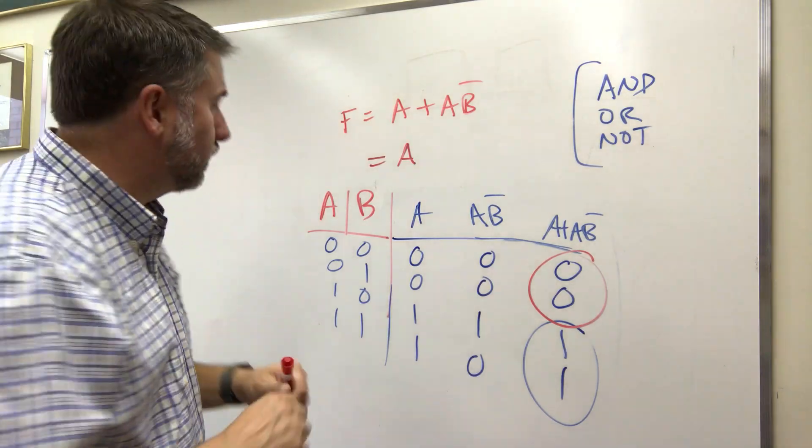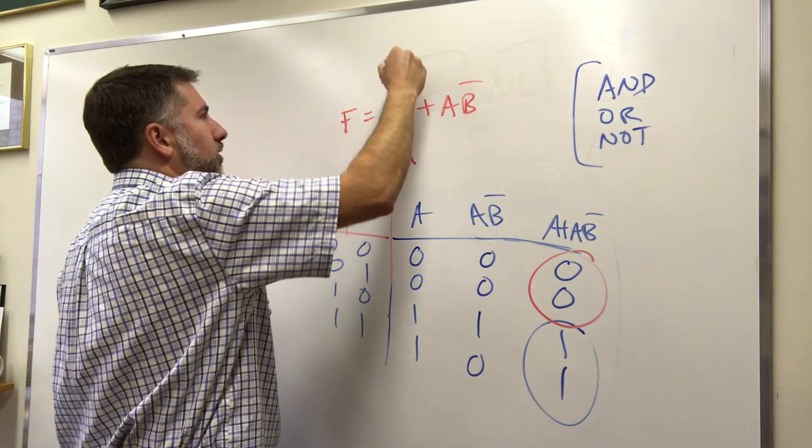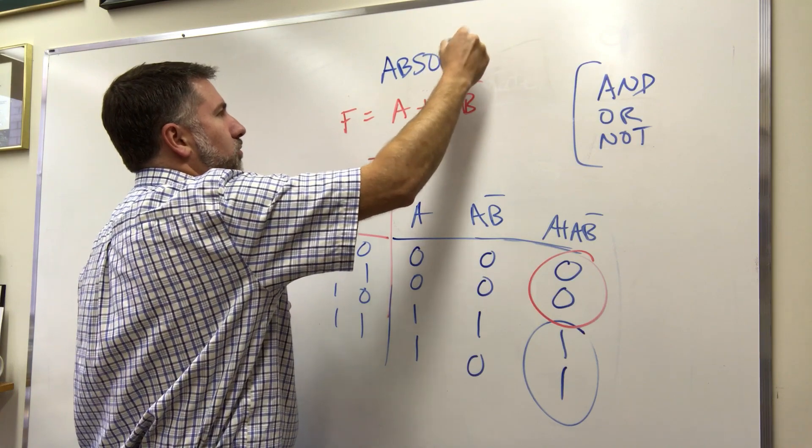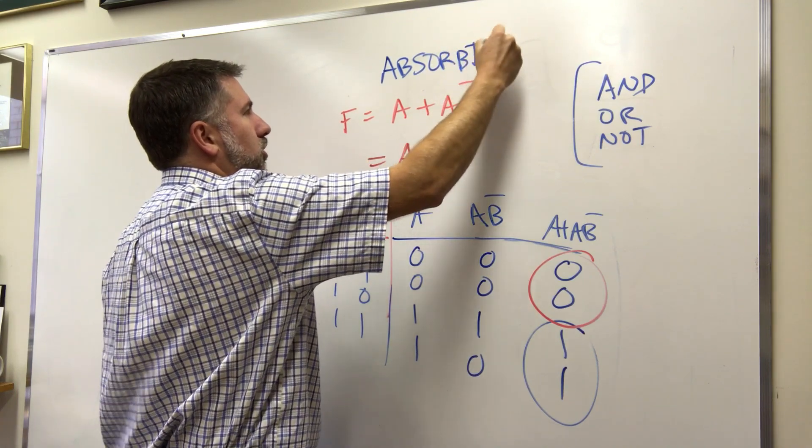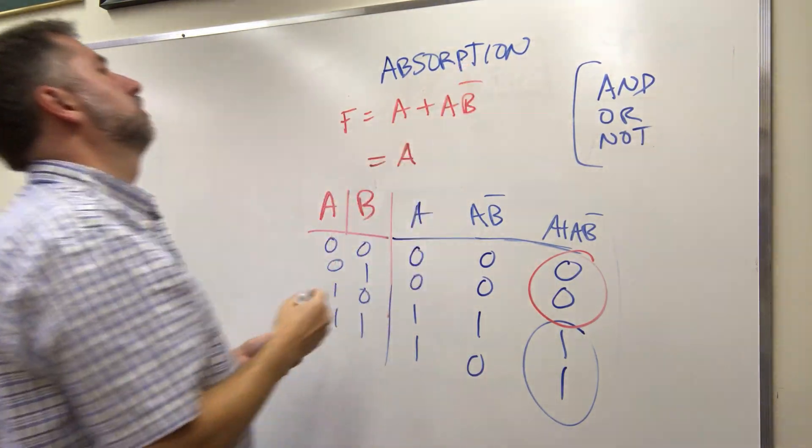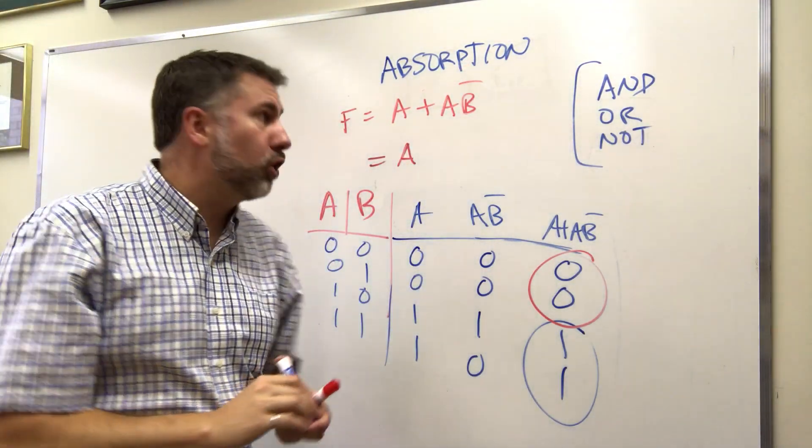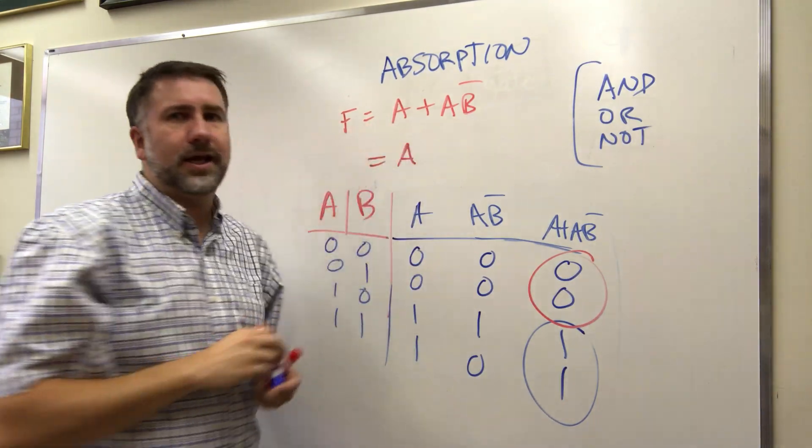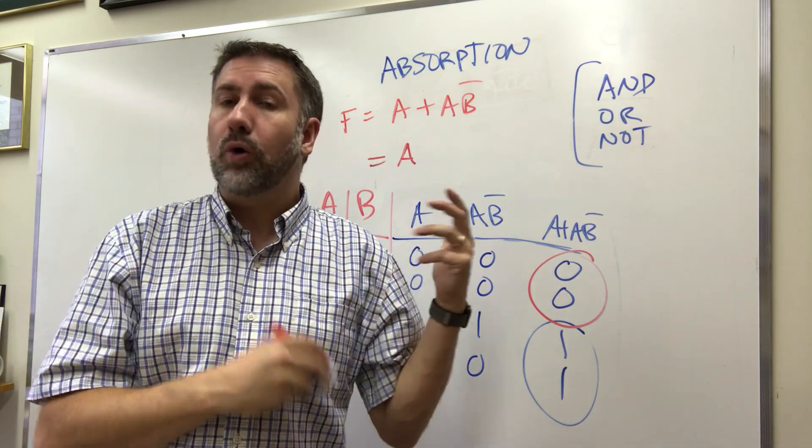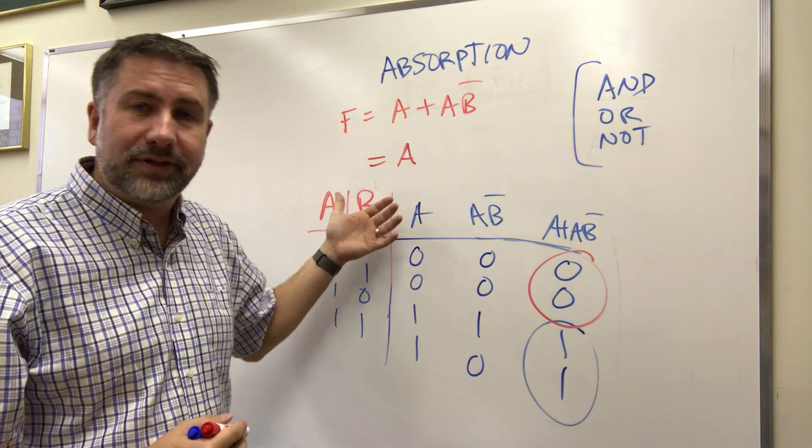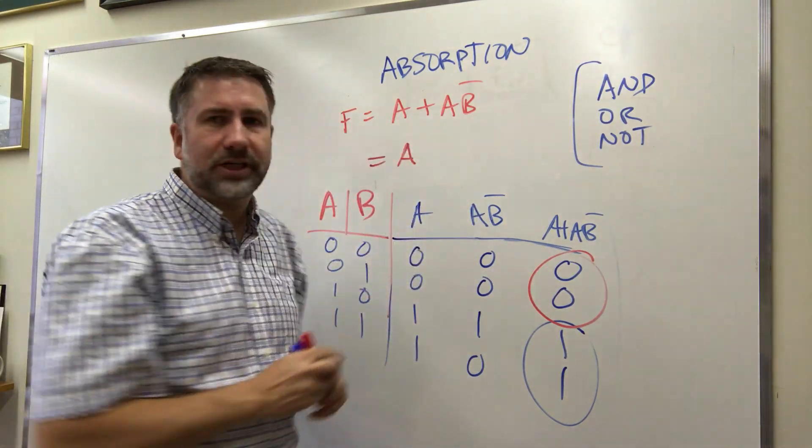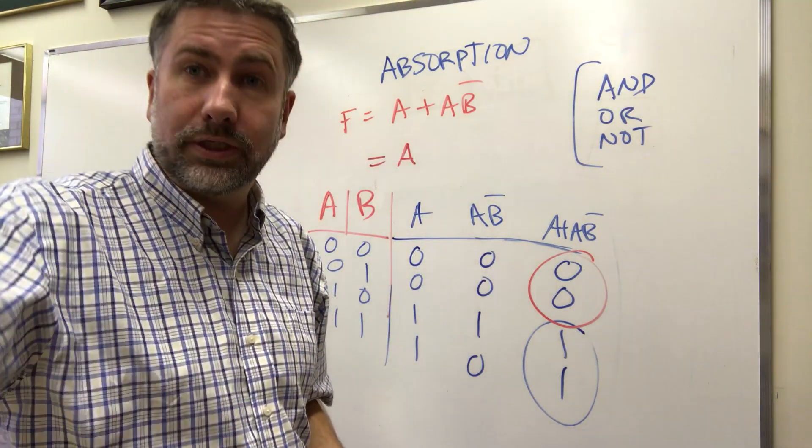This one has a name actually, this is called absorption, absorption. We're absorbing the A B prime into the A. And mathematicians have actually put together a whole list of the kind of things that we can do in a common way so the simplifications like these can be easier to do. Next video I'll show you the whole list.